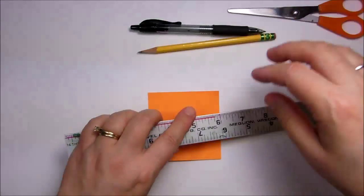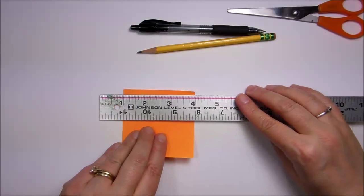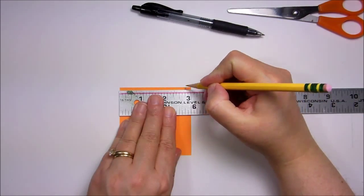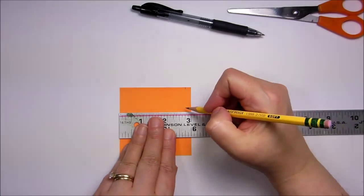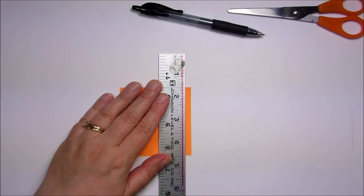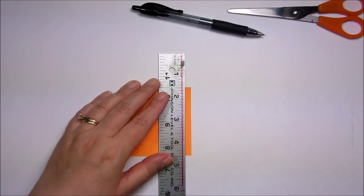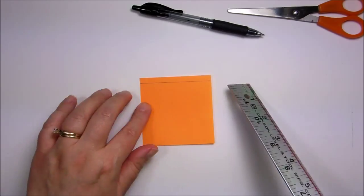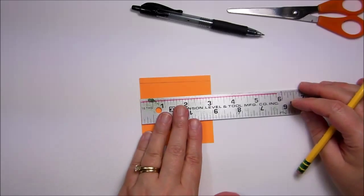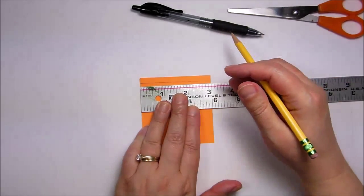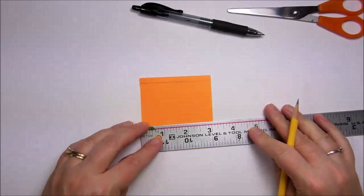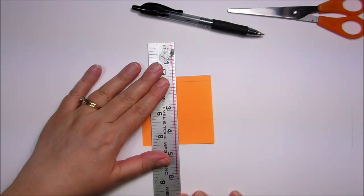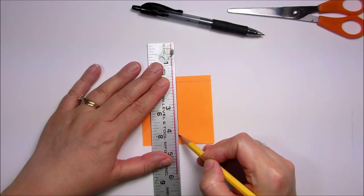Take your ruler and you measure across one and two and three quarters. You want to mark it in a couple of places and draw a line. Make sure that the sticky side is the side that you're doing this template on. You're going to do one and a half inches on this side. And then you're going to draw those two lines together.